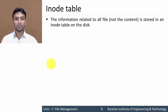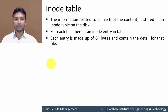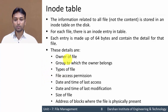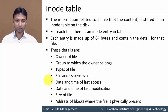The third category is the inode table. The information related to all files — not the content, but the metadata — is stored in the inode table on the hard disk. For each file there is an inode entry in the table, and each entry is 64 bytes and contains details such as: owner of the file, group to which the owner belongs, type of file, file access permissions, date and time of last modification, size of the file, and address of blocks where the file is physically present.